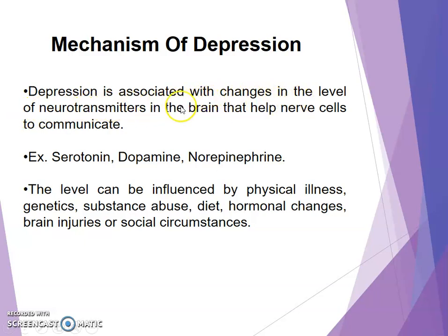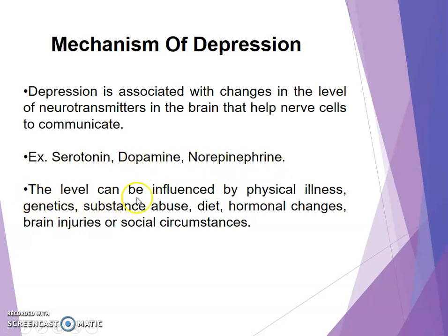Mechanism of depression: depression is associated with changes in the level of neurotransmitters in the brain that help nerve cells to communicate — for example, serotonin, dopamine, and norepinephrine. These levels can be influenced by physical illness, genetics, substance abuse, diet, hormonal changes, brain injury, or social circumstances.